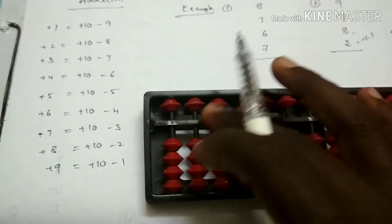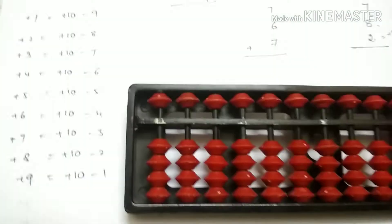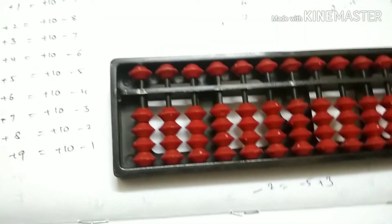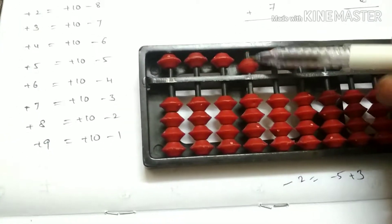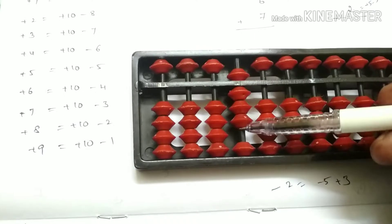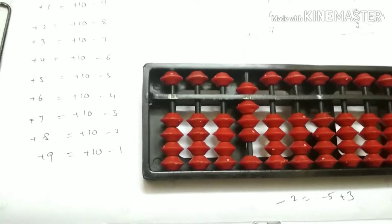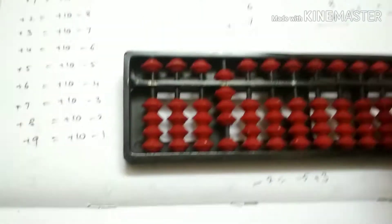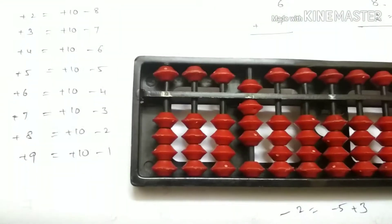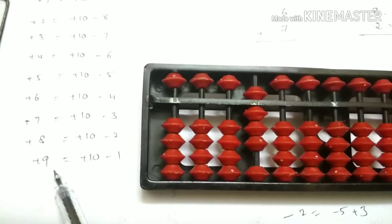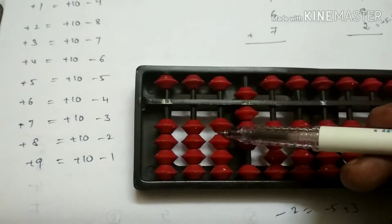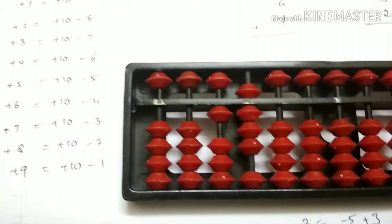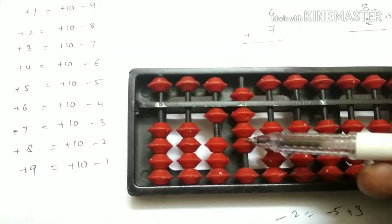Third question: 8 plus 9 plus 6 plus 3. First, we arrange in the initial position. Taking 8 — once digit: 5, 6, 7, 8. Total 8. Next addition, 9. Take 9 — 9 is equal to 10 minus 1. So take 10 digit, take 10, and do subtract minus 1.